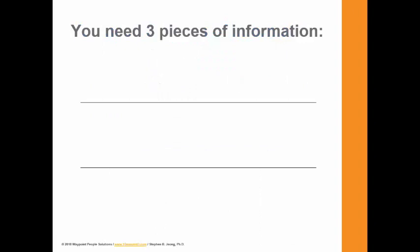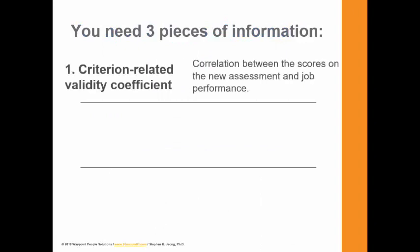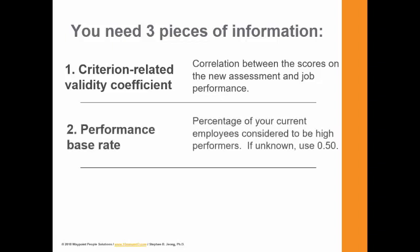To use this table, you'll need three pieces of information. Similar to the previous lectures, you'll need the criterion-related validity coefficient — this is the correlation between scores on the new assessment and job performance. Second piece of information is the performance base rate. This is your percentage of current employees considered to be high performers. If this is unknown, you can use 0.5, meaning half of the employees are above and half are below average.